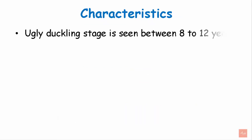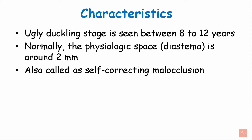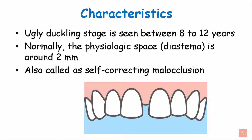Let's see the characteristics. The Ugly Duckling Stage is seen between 8–12 years of age. Normally, the physiologic space — that's the midline diastema — is around 2 mm. This is also called as self-correcting malocclusion. This is the midline diastema.